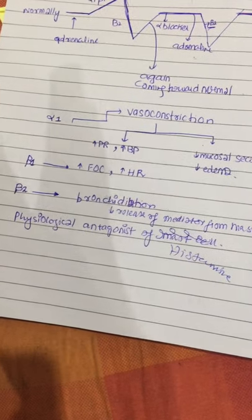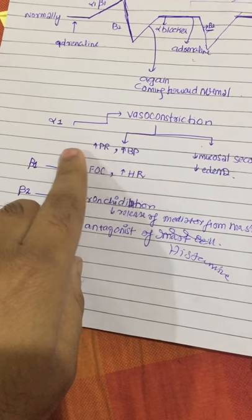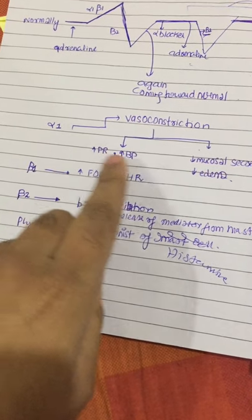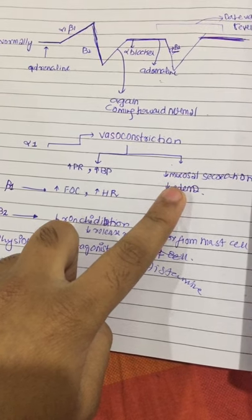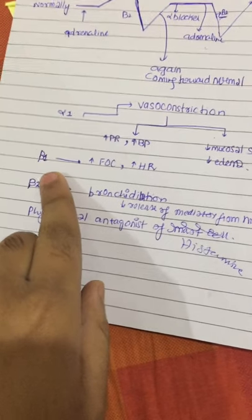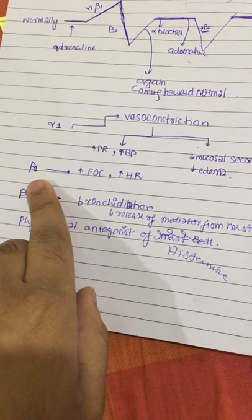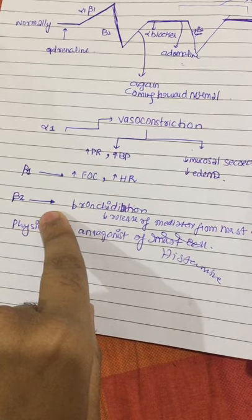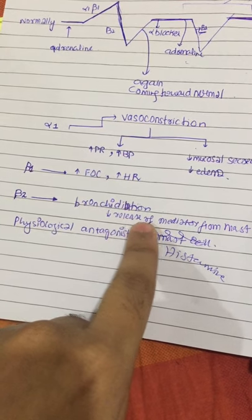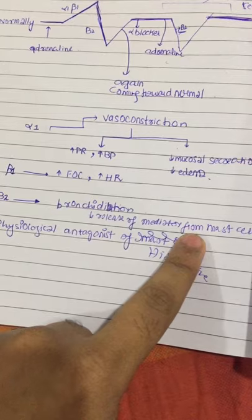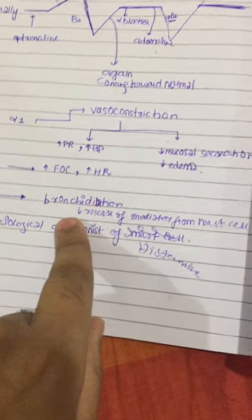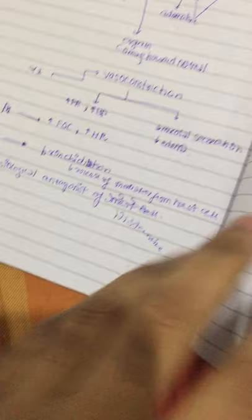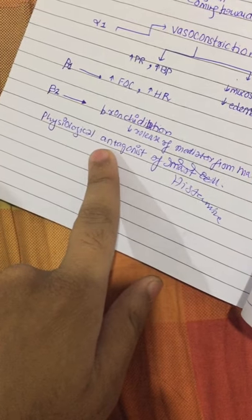To summarize the anaphylaxis mechanisms: alpha-1 causes vasoconstriction, increasing blood pressure and reducing mucosal secretion and edema. Beta-1 increases force of contraction and heart rate. Beta-2 causes bronchodilation, reducing edema and mediator release from mast cells. Adrenaline is also a physiological antagonist for histamine.